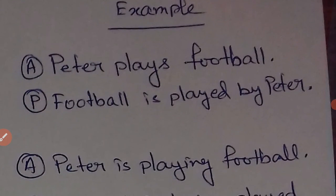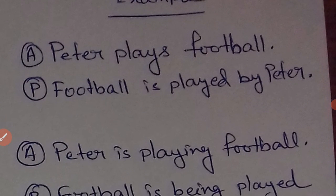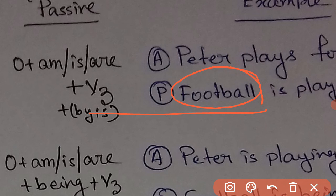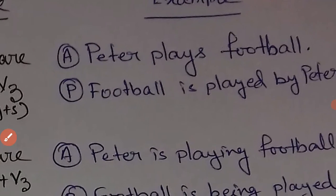Let's come to the example. Peter is the subject, plays is the verb, football is the object. According to the formula Object plus am/is/are plus V3, the object is football in this case, so I have written football here. Football is a singular noun, so football is followed by 'is.' After putting 'is,' I have to write the third form of the verb. The third form of the verb is 'played.'